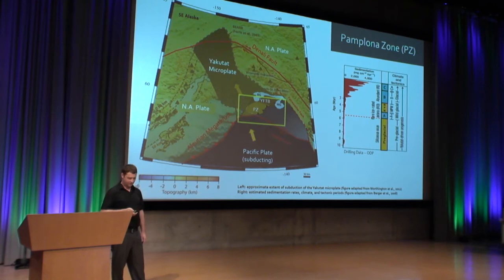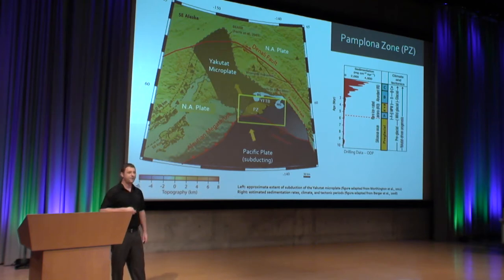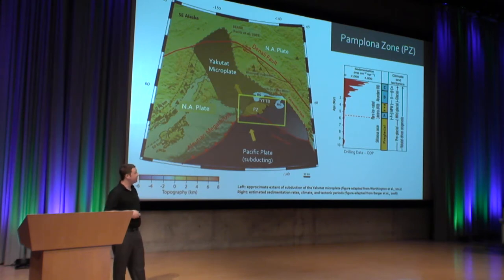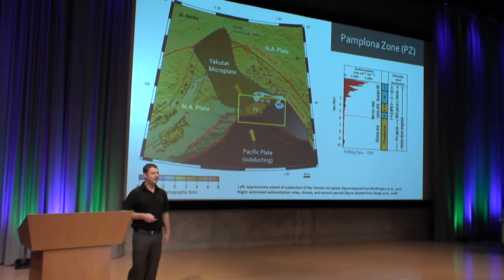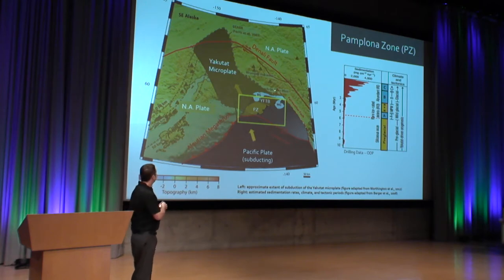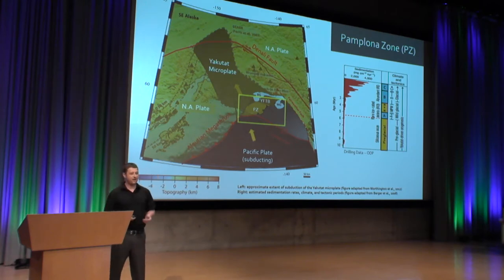We're going to focus on this area called the Pamplona Zone. This is actually offshore, and there's an onshore corollary called the Yakutaga fold and thrust belt. On top of all of this, we have two major glaciers, which are remnants from larger ice sheets.